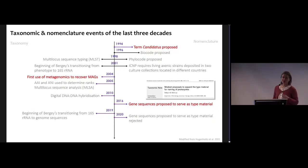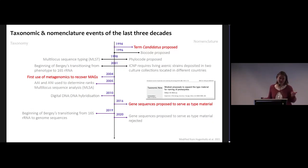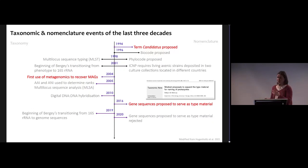I'm not going to reveal my age, but ironically the first study that used the 16S rRNA gene to characterize microbial communities from environmental samples happened to be in 1985 — so now you know my age. What happened next was a massive explosion of studies that started characterizing uncultured microbial diversity based on this molecular chronometer.